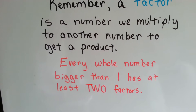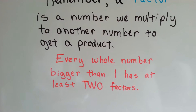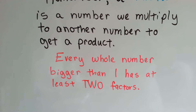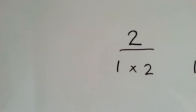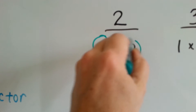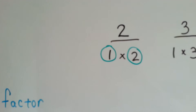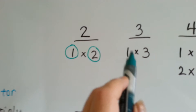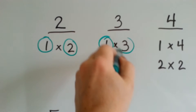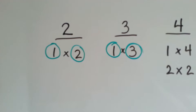Every whole number — not a fraction — every whole number that's bigger than 1 has at least 2 factors. I'll show you. 2 is bigger than 1, right? Its factors are 1 and 2 because 1 times 2 is 2. So 2 has the factors of 1 and 2. 3 has the factors of 1 and 3 because 1 times 3 equals 3, so they're factors of 3.